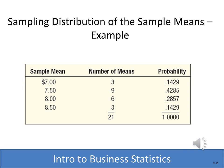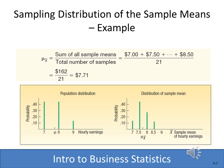Here we see the sampling distribution of the sample means showing how often each mean occurs, along with a probability distribution. The key point illustrated on the graph is that when we plot the distribution of those different means, it approaches a normal distribution more so than the population itself — an important concept we'll build on next.